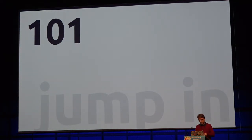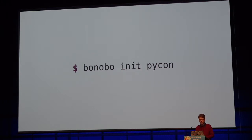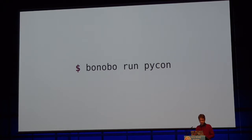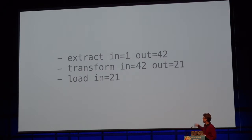Jumping into Bonobo is quite simple. You just pip install it — there are very few dependencies. You can create a project using cookiecutter, which bootstraps a very small project, and you can run it right away. You will see in the console all the statistics of your graph: if you have three nodes — extract, transform, and load — you will see the inputs, outputs, and number of errors of each node.